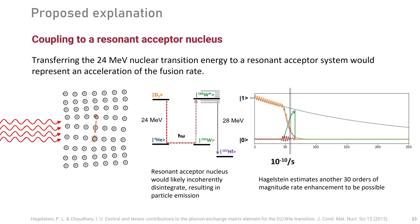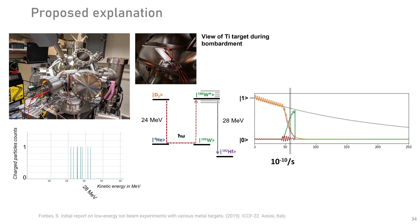Peter Hagelstein's concrete modeling of that situation expects more than 30 orders of magnitude enhancement from such a setup. The low-energy accelerator experiment at MIT used a titanium sample with expected tungsten implantation from the filament, yielding the burst of 28 MeV charged particles — pointing toward the potential of nuclear excitation transfer and providing strong motivation to further study, model, and develop experiments around it.